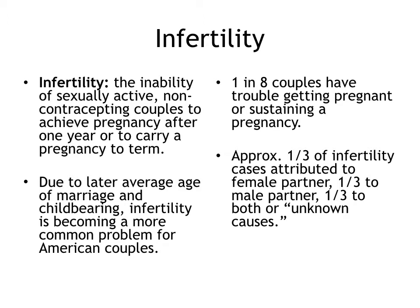It's estimated that one in eight couples in the United States will have trouble getting pregnant or sustaining a pregnancy. In about a third of these cases, infertility is attributed to something with the female partner. In about a third, it's attributed to the male partner. And in about a third, it's attributed to both, or to unknown causes.